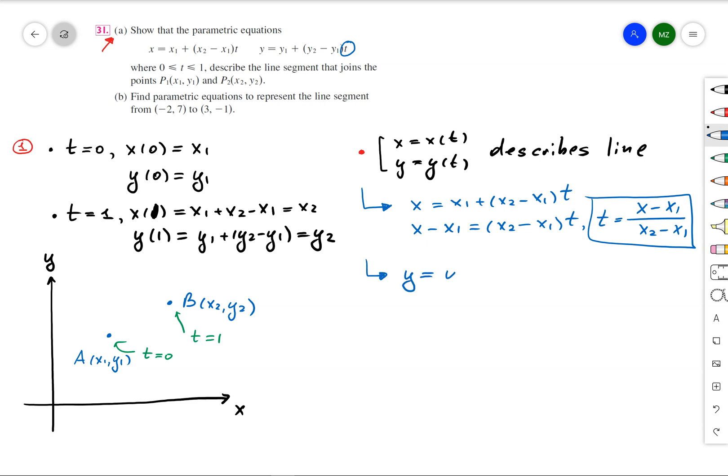And then I'm going to plug in the t into my second parametric equation and I'm going to obtain that y equals y1 plus (y2 minus y1) times (x minus x1) over (x2 minus x1). And then we can see that that equation is the actual equation of a line where x and y are variables and y1, y2, x1, x2 are constants.